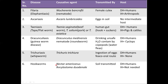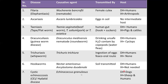Next are hookworms — two species: Necator americanus and Ancylostoma duodenale. They infect the intestines and are transmitted via soil. The definitive host is humans and there is no intermediate host. Next is cystic echinococcosis, also called hydatid disease, transmitted by Echinococcus granulosus. Its definitive host is dogs and the intermediate host is sheep and humans.